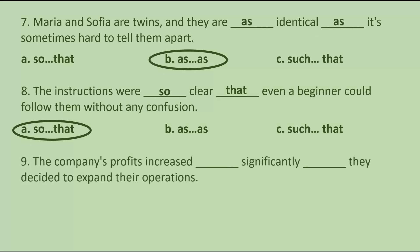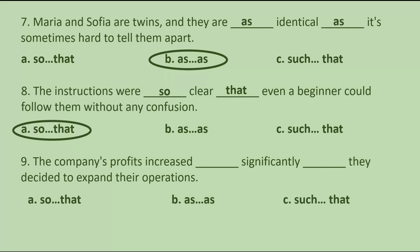Number 9. The company's profits increased blank significantly, blank they decided to expand their operations. A. So...that. B. As...as. C. Such...that.